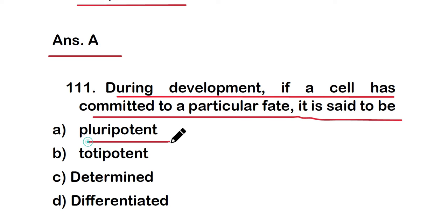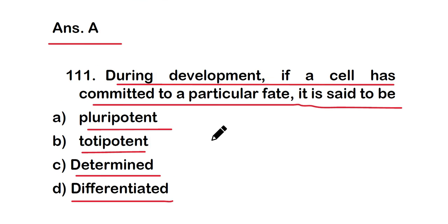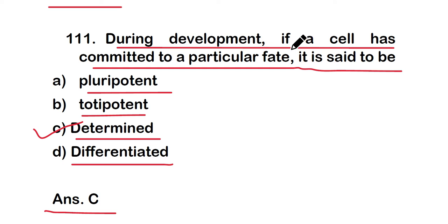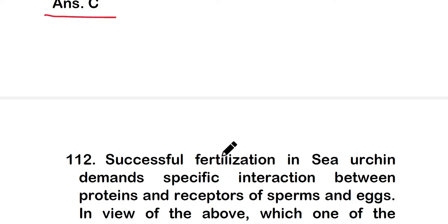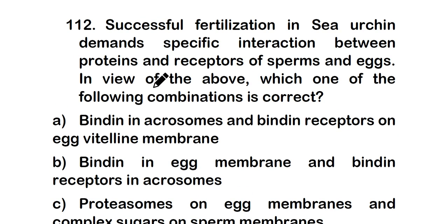Question 111: During development, if a cell has committed to a particular fate, it is said to be: (a) pluripotent, (b) totipotent, (c) determined, or (d) differentiated. The correct answer is option C — determined. A cell that has committed to a particular fate is said to be determined.